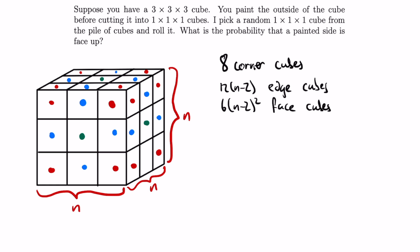The total number of cubes is n to the 3, so as before we can write out an expression for the total probability. We have 8 over n to the third times 1 half, plus 12 times n minus 2 over n to the third times 1 third, plus 6 times n minus 2 squared over n to the third times 1 over 6, which we can actually simplify to 1 over n.